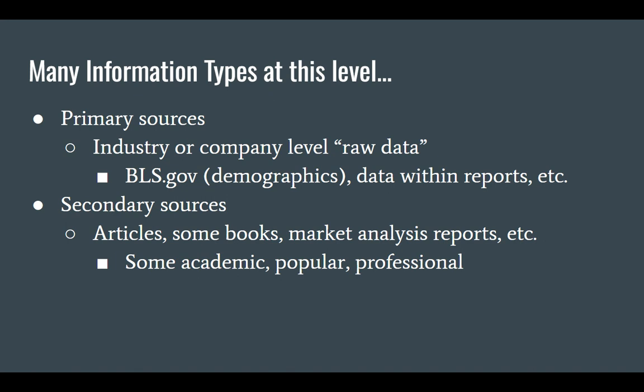There are a lot of different information types you may be seeking in this project. They typically fall into the categories of primary or secondary information. Primary sources are raw data — in the context of what we're doing, industry or company level data. You might need statistics that come from the Bureau of Labor Statistics, government websites, the SEC Edgar exchange site where you're seeing actual data reported by companies — essentially data that doesn't have a lot of interpretation to it.